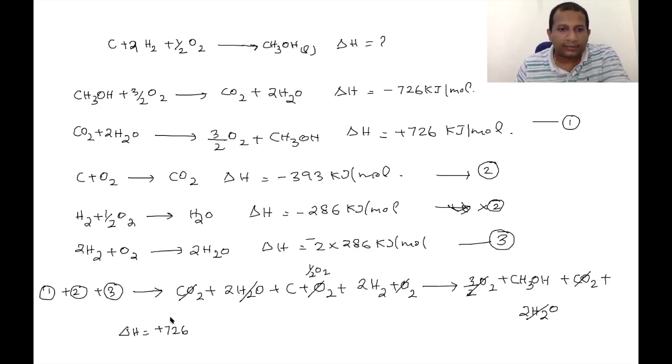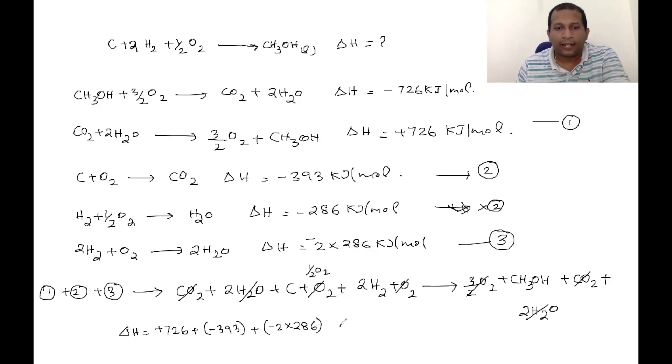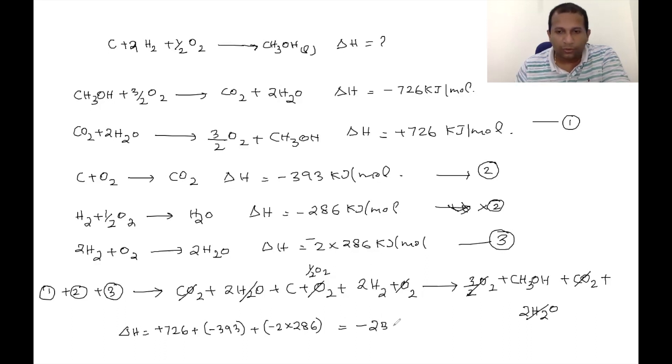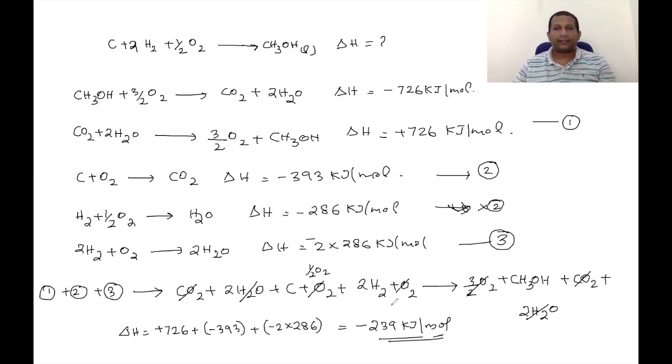Now we add the three ΔH values: (+726) + (-393) + 2×(-286) = -239 kJ/mol. This is the final answer. This is how Hess's Law works — if you want to find the total enthalpy change in one step, that is basically Hess's Law. If you have questions, please comment and I will definitely answer. Thank you.